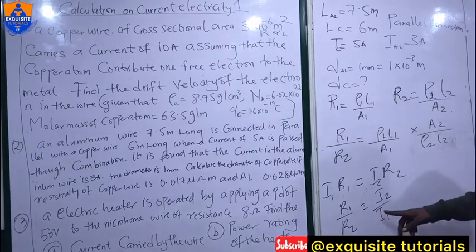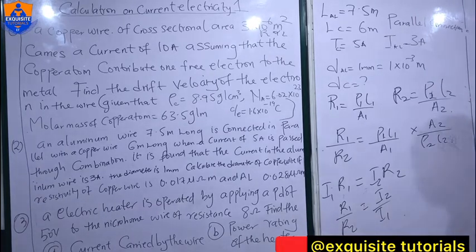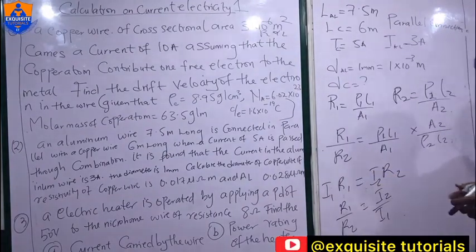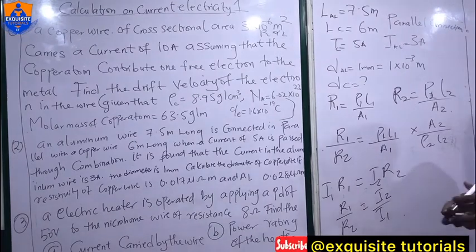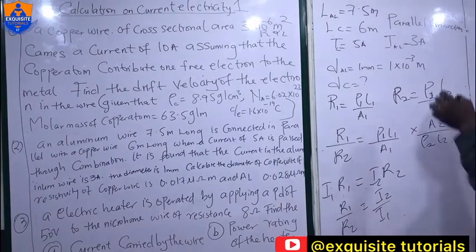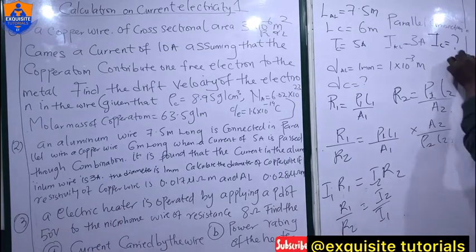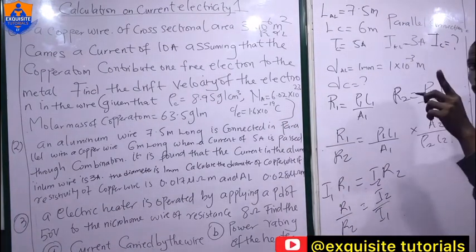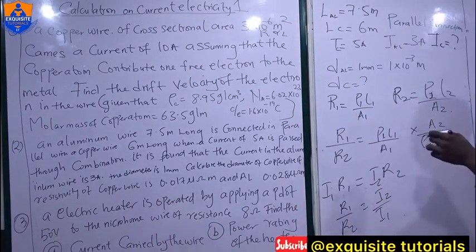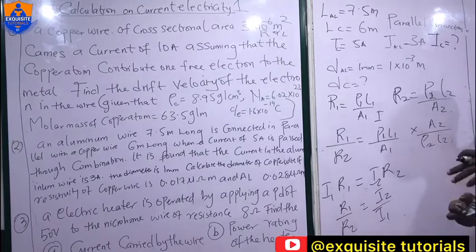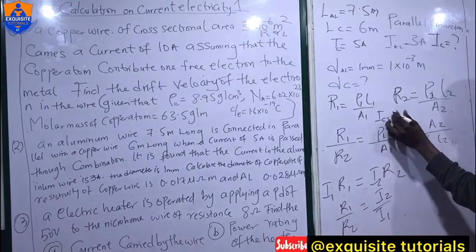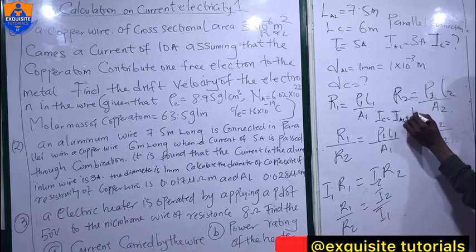The resistance in the question was not given initially, but we can relate it to the current. I2 is the current for the copper wire, which is not yet given but we can calculate it. In a parallel connection, the total current equals the sum of the individual branch currents. So the total current equals the aluminum current plus the copper current.